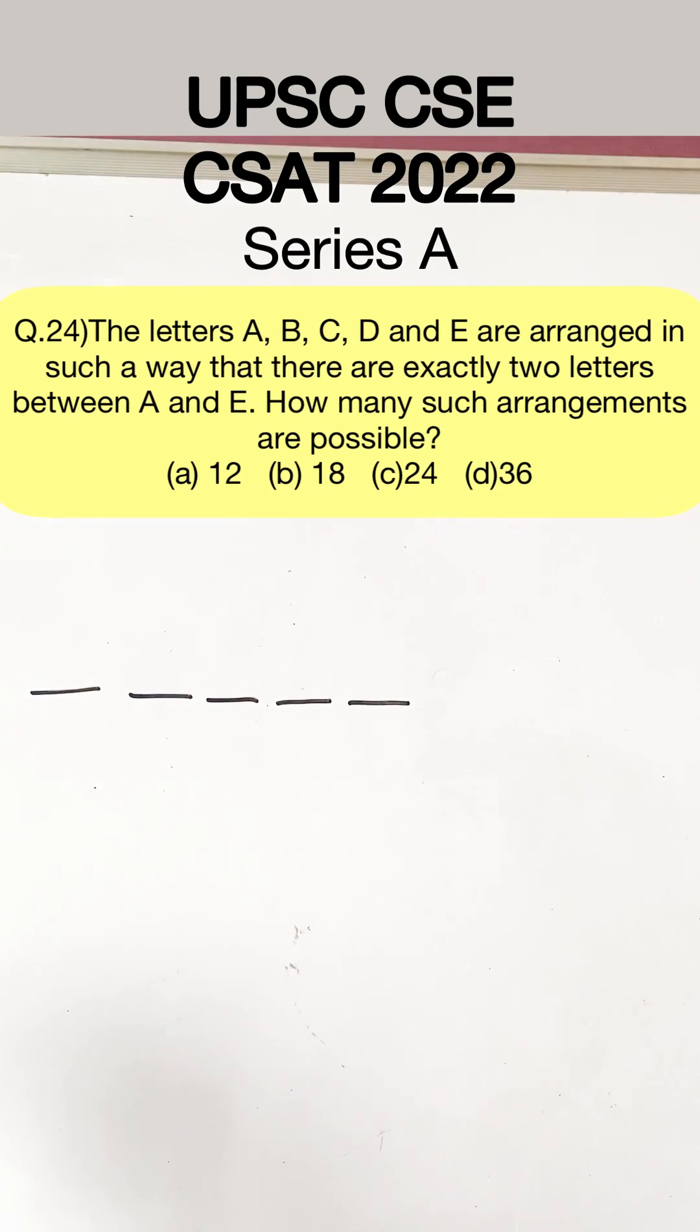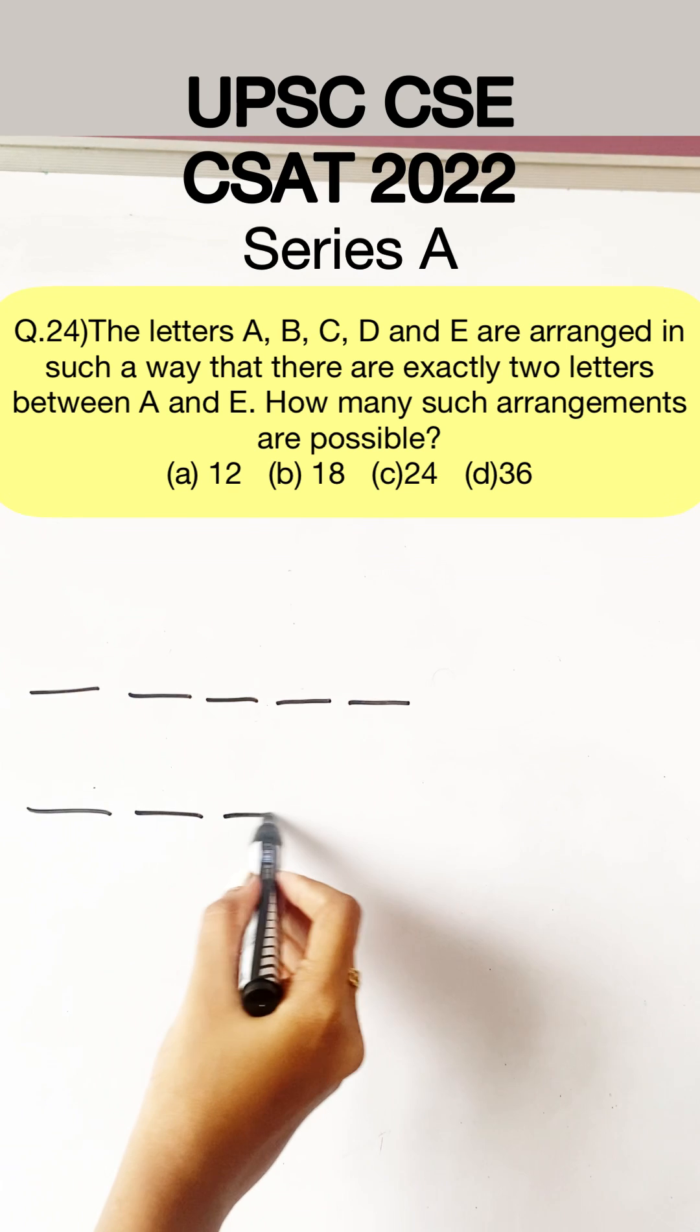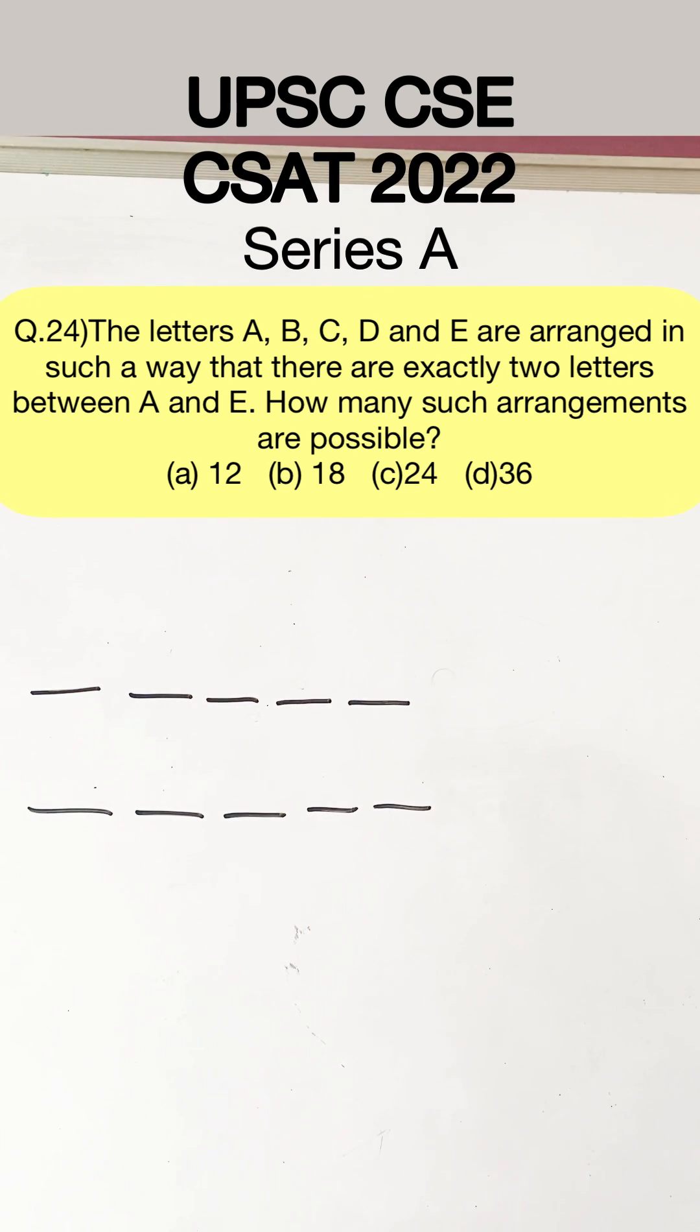The letters A, B, C, D and E are arranged in such a way that there are exactly two letters between A and E. How many such arrangements are possible?